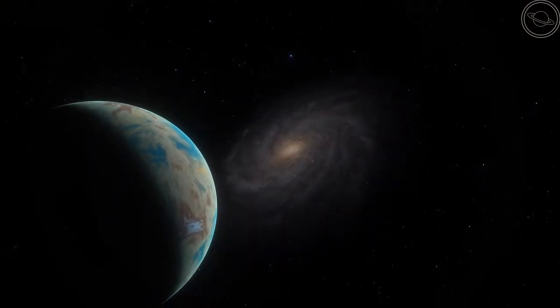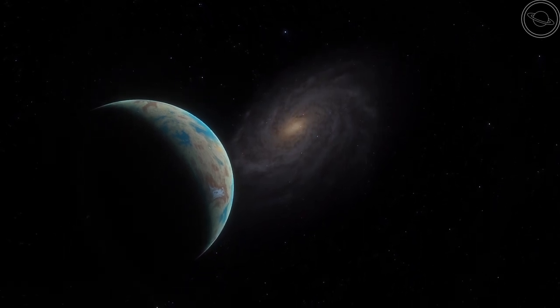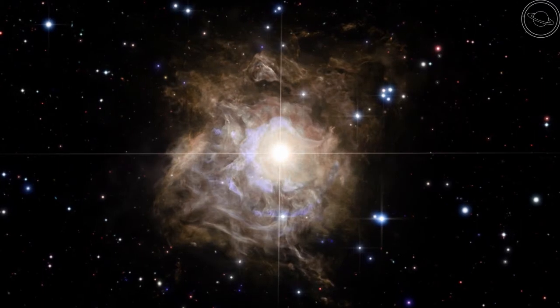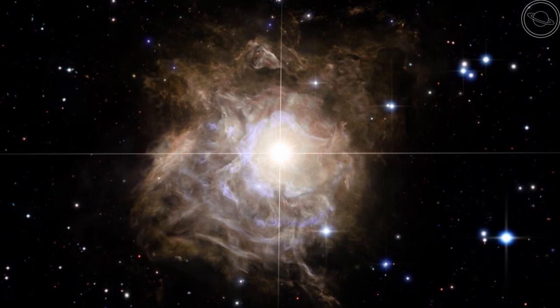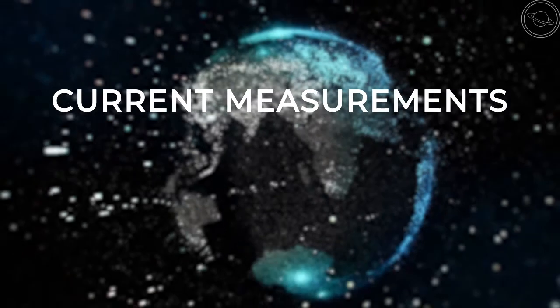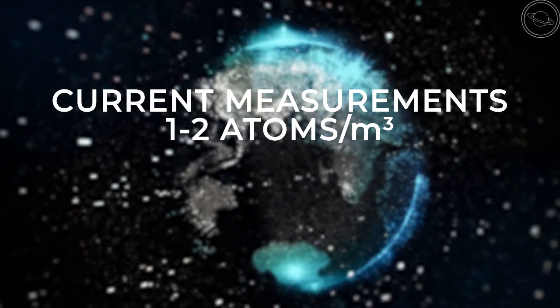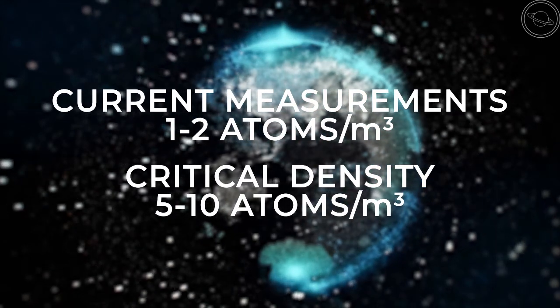As I said in the previous dark energy video, the current theory is that the universe is below the critical density, and will keep expanding forever. This is because, as more space is created from expansion, more dark energy is created, and the process increases exponentially. The current measurements of the density of the universe is about 1-2 atoms per cubic metre of space. The critical density, however, is estimated to be around 5-10 atoms per cubic metre of space. This would mean that either the big rip or the big freeze is the ultimate fate of the universe, and unless something changes, this is how the universe will end.